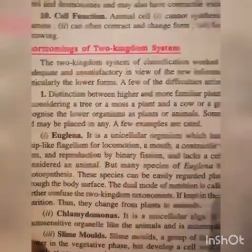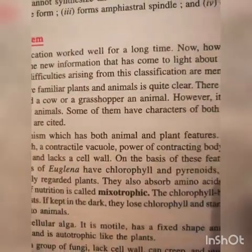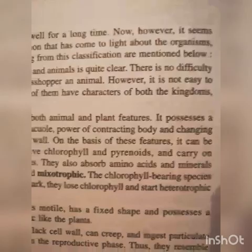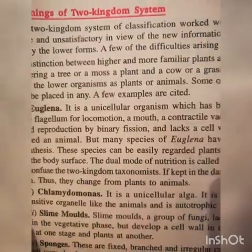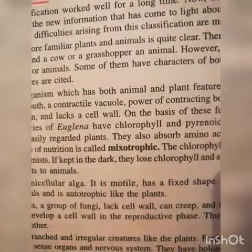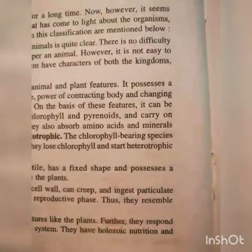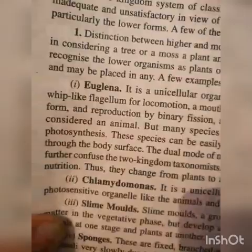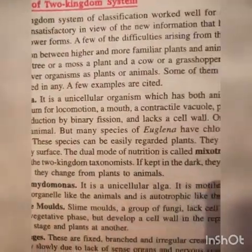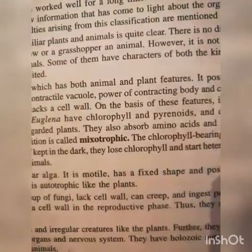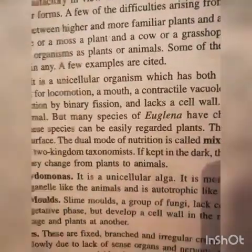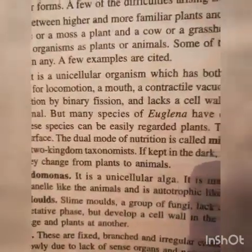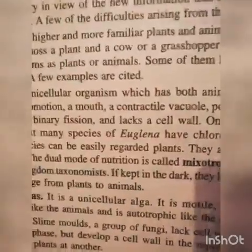Distinction between higher and more familiar plants and animals is quite clear — there is no difficulty in considering a tree or moss as a plant and a cow or a grasshopper as an animal. However, it is not easy to recognize lower organisms as plant or animal, as some of them have characters of both kingdoms and may be placed in either. There are some organisms which have characteristic features of both animals and plants.